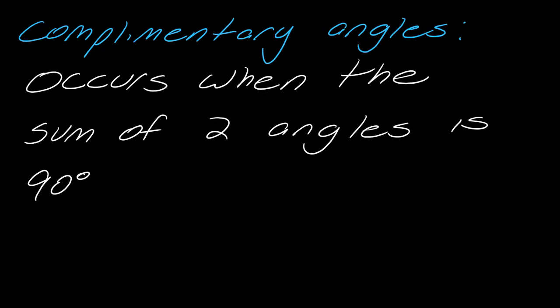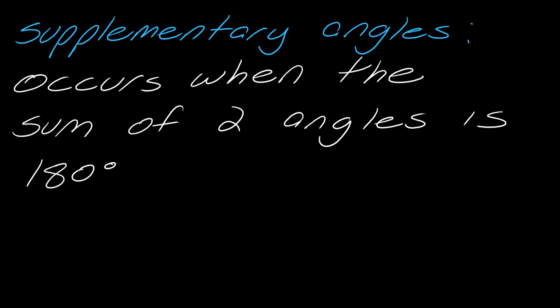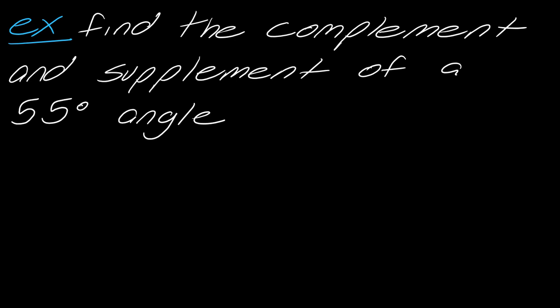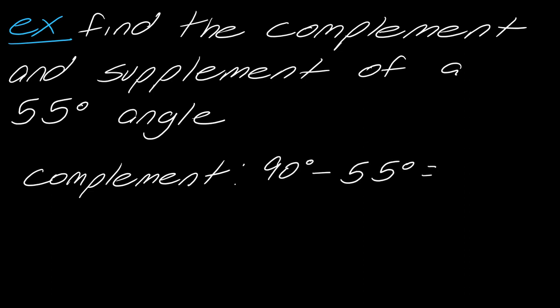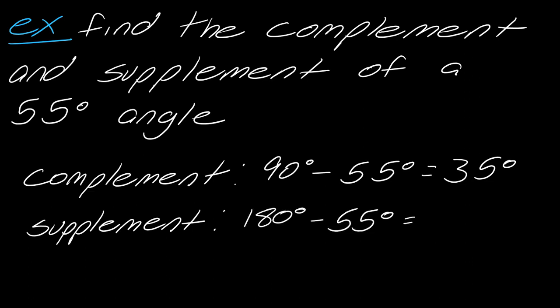Let's talk about some other types of angles. Complementary angles occur when the sum of two angles is 90 degrees, so two angles will be complementary to one another. Two angles can also be supplementary to one another — this occurs when the sum of two angles is 180 degrees. For example, find the complement and the supplement of a 55-degree angle. For the complement, you take 90 degrees and subtract 55 degrees to get 35 degrees — that's the complement. For the supplement, start with 180 and subtract 55 to get 125 degrees.